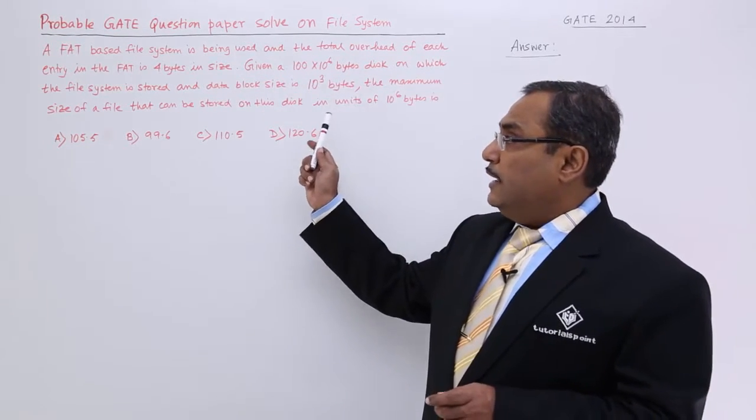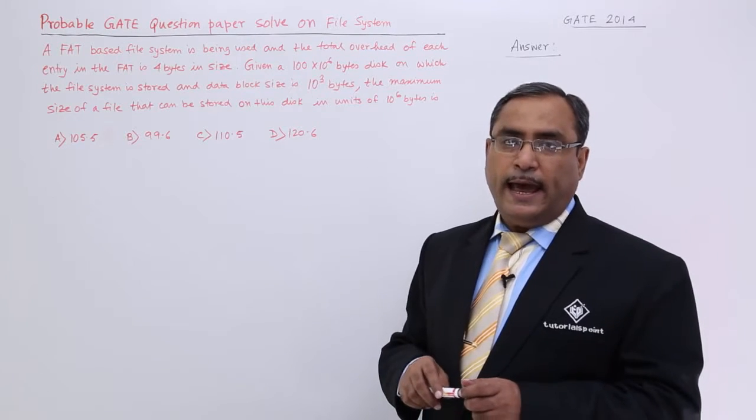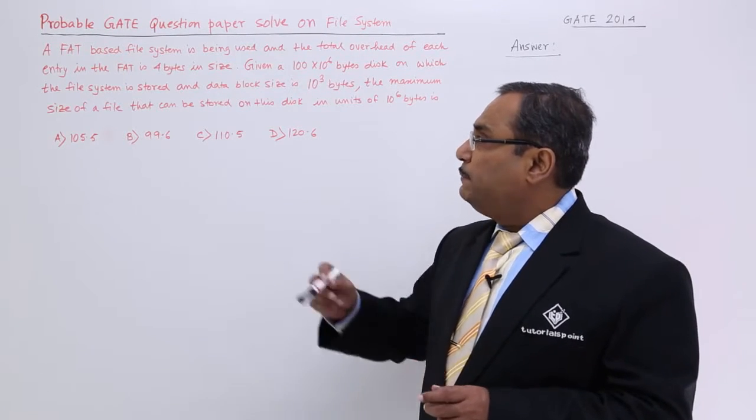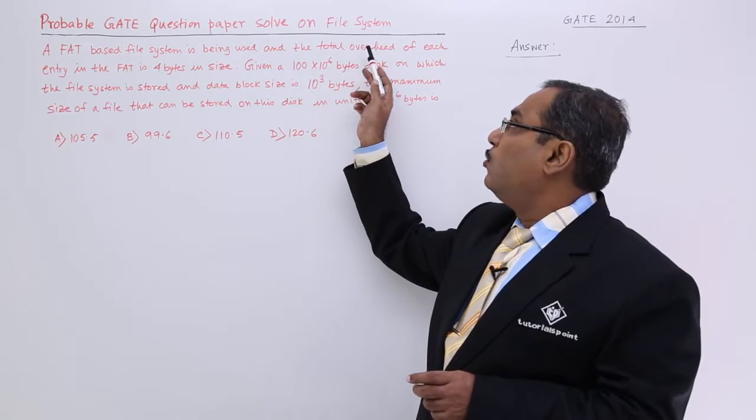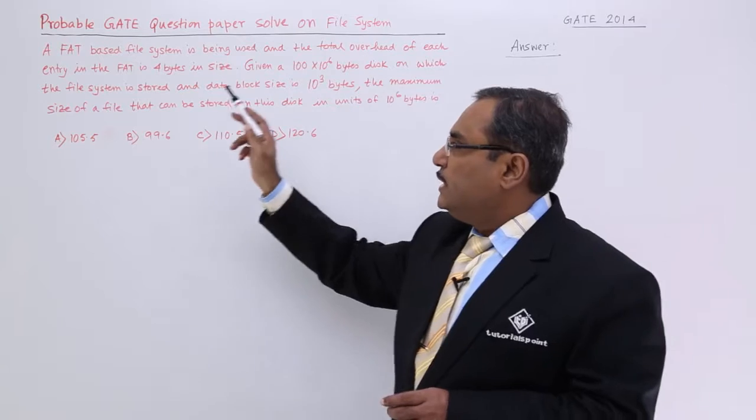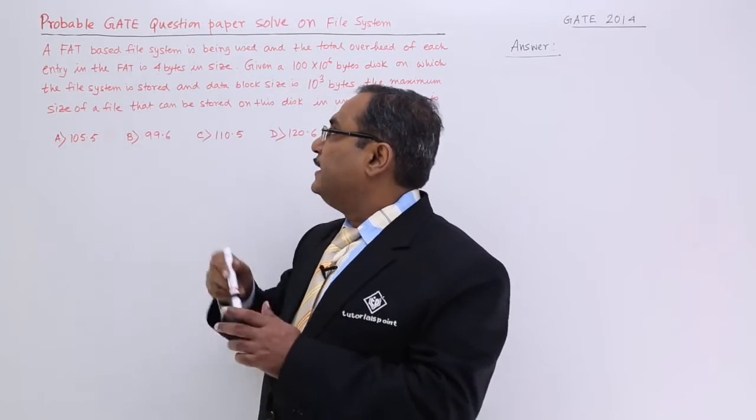Now a FAT - we know the full form, that is file allocation table. A FAT based file system is being used and the total overhead of each entry in the FAT is 4 bytes.